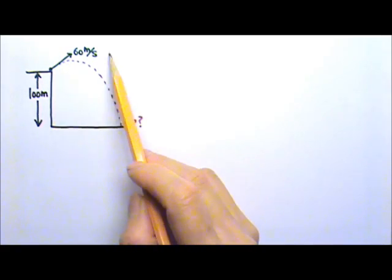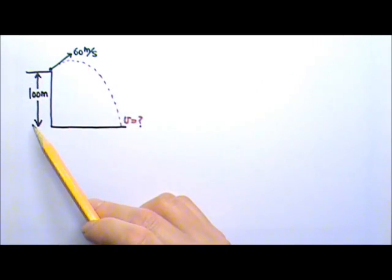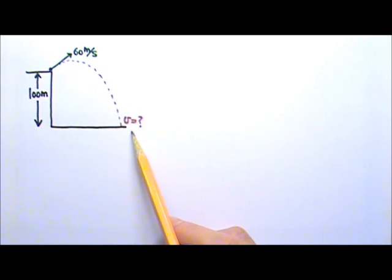A projectile is shot with a speed of 60 meters per second from the top of a 100 meter high cliff. At what speed does the projectile strike the ground below?